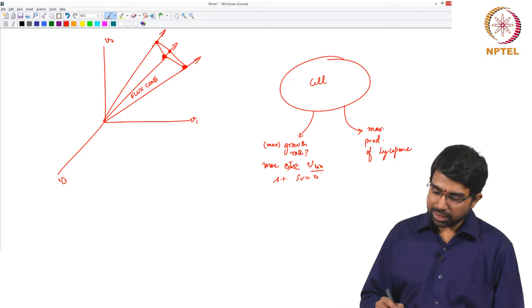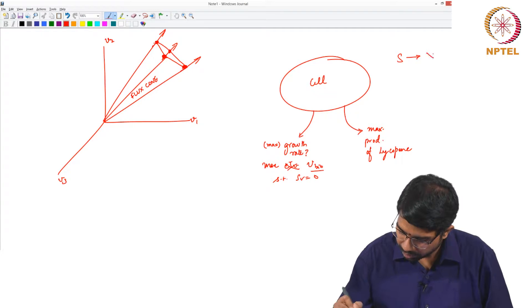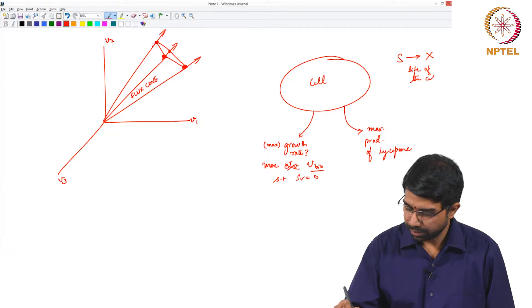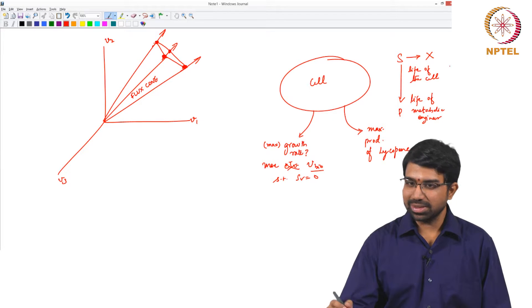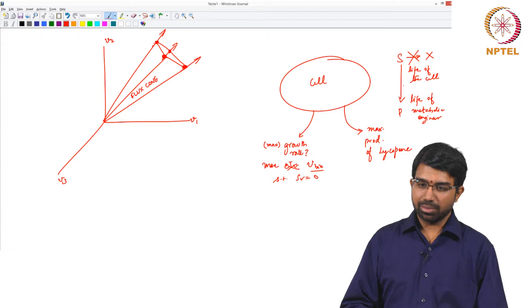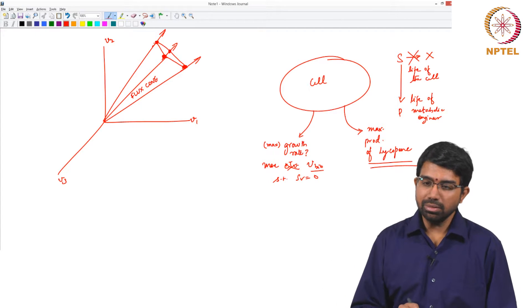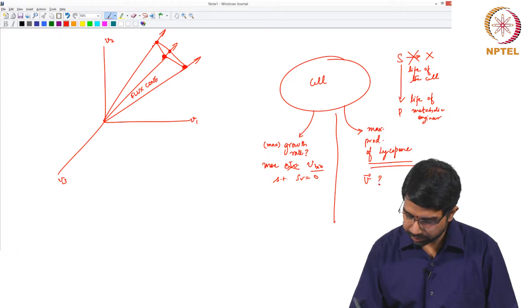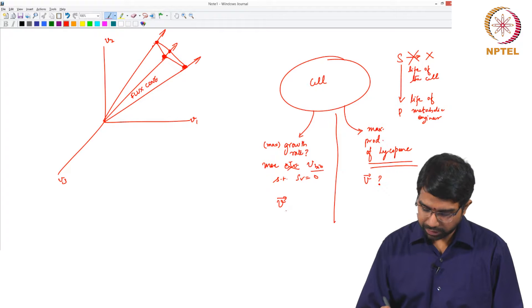You will invariably see that, as somebody once told, S to X is the life of the cell, substrate to biomass. S to P is life of metabolic engineer. The cell wants to do S to X but you want to somehow pull it and do S to P. You do not want to totally kill this. The cell is dead, you cannot have any product. So you want to strike an optimum somewhere here. But now if you say maximize production of lycopene, what is the use of the flux distribution that you get here versus the use of the flux distribution that you get here?